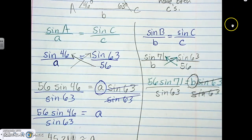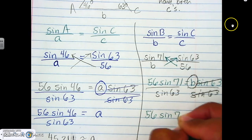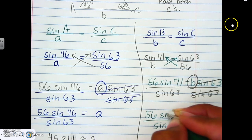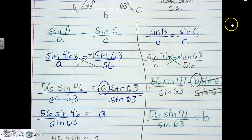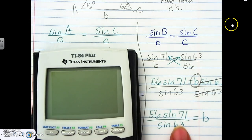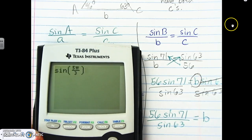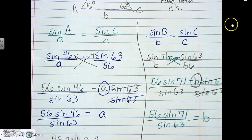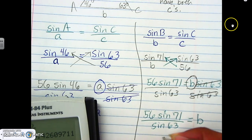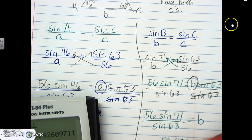Putting that fraction into the calculator — since only angle B changed from 46 to 71, you can use second-enter and just change 46 to 71. We get approximately 59.43, which rounds to 59 inches. So side b is 59 inches, and we're done solving the triangle.